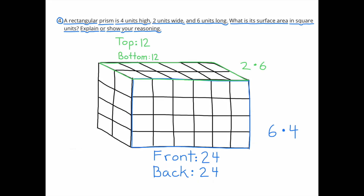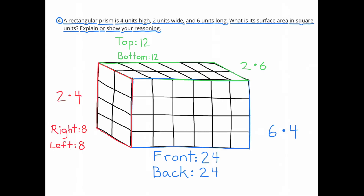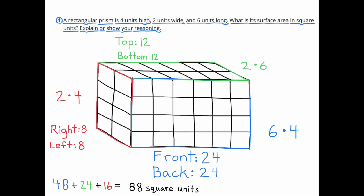The top and the bottom both have a surface area of 12 square units. And the right side and the left side each have a surface area of 8 square units. All combined, the rectangular prism has a total surface area of 88 square units.